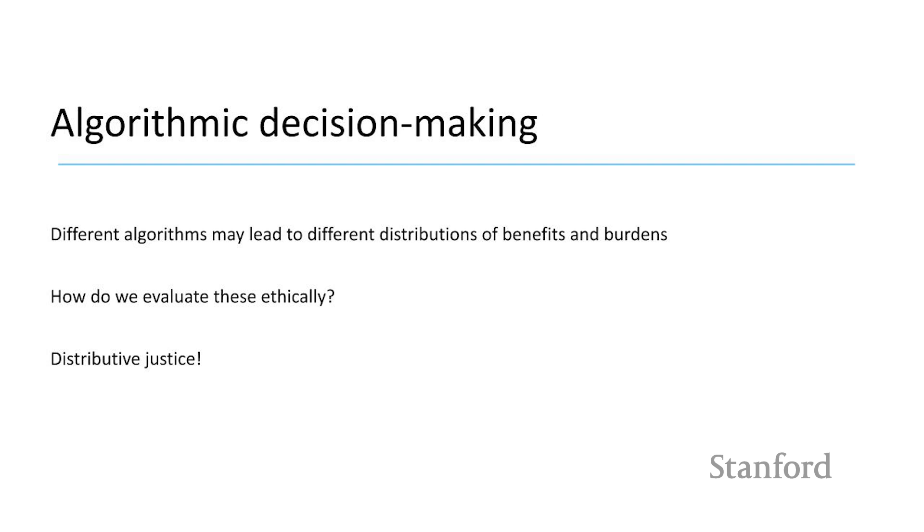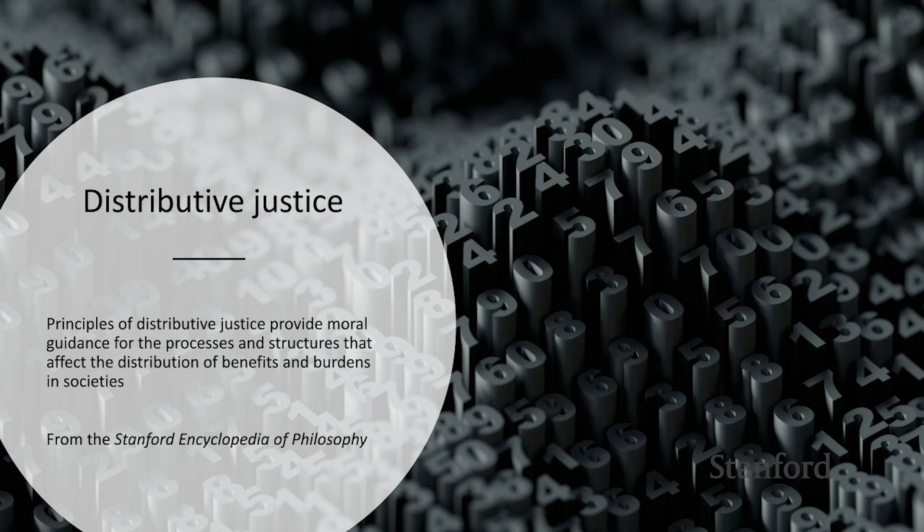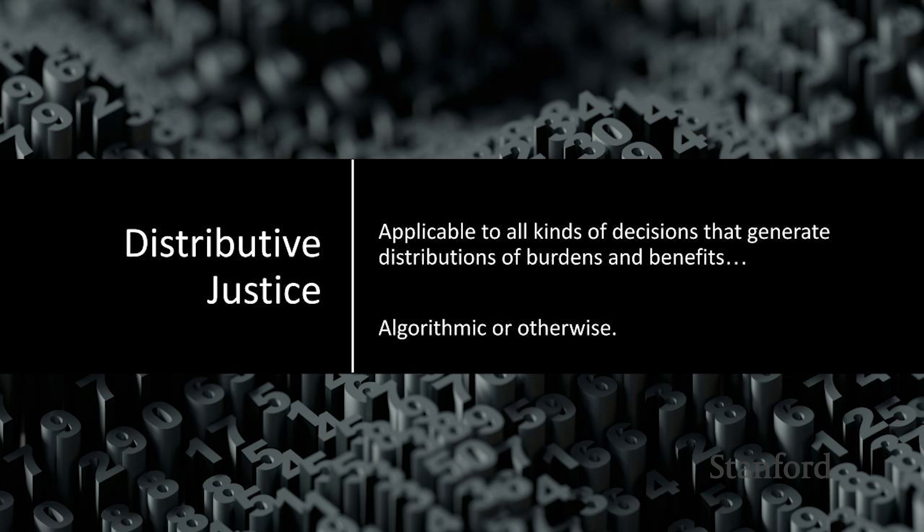And for that, you need to appeal to a field of moral and political philosophy that is known as distributive justice. The principles of distributive justice are those that provide moral guidance for the processes and structures that affect the distribution of benefits and burdens in societies or among populations. This is taken from the Stanford Encyclopedia of Philosophy. Principles of distributive justice are applicable to all kinds of decisions that generate distributions of burdens and benefits, which may be algorithmic or otherwise.